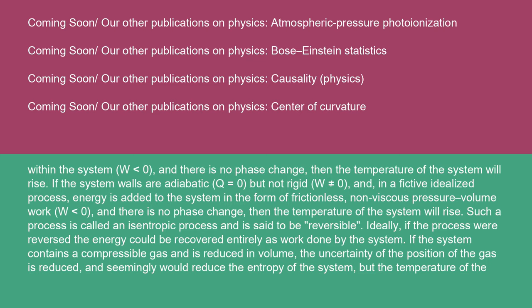If the system walls are adiabatic (Q = 0) but not rigid (W ≠ 0), and in a fictive idealized process energy is added to the system in the form of frictionless, non-viscous pressure-volume work (W < 0), and there is no phase change, then the temperature of the system will rise. Such a process is called an isentropic process and is said to be reversible.